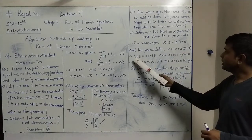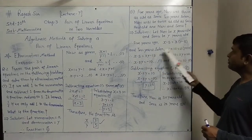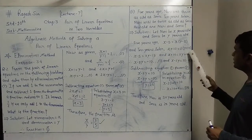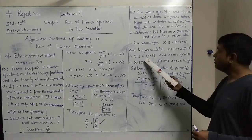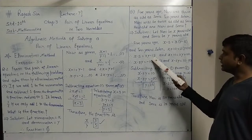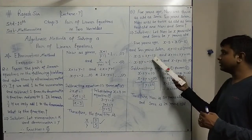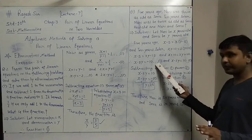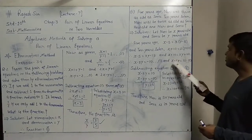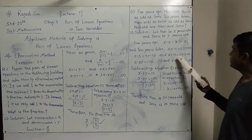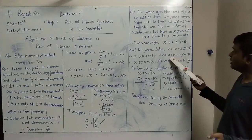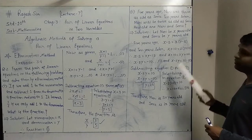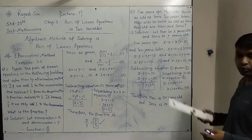Simplifying the first equation: x − 5 = 3y − 15, so x − 3y = −10. Simplifying the second equation: x + 10 = 2y + 20, so x − 2y = 10. These are the two equations in simplified form.